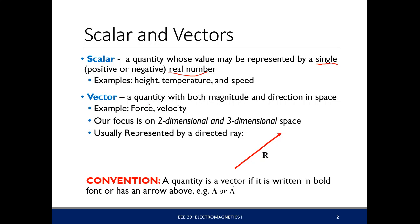A vector, in contrast, is a quantity with both magnitude and direction. You need at least two scalar values to actually represent it. Examples are force and velocity. Force is a vector because it needs direction to be defined. Our focus for EEE 23 will be on two-dimensional and three-dimensional space, though vectors are defined for n-dimensional spaces in linear algebra.